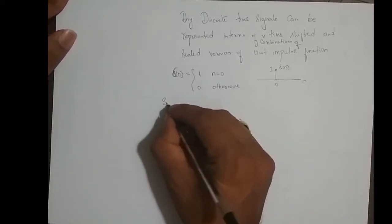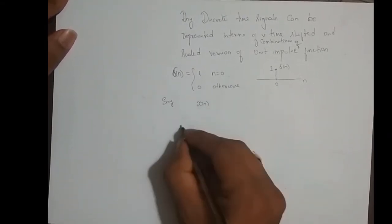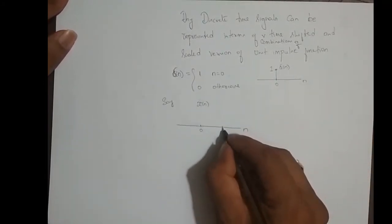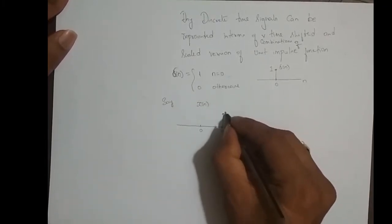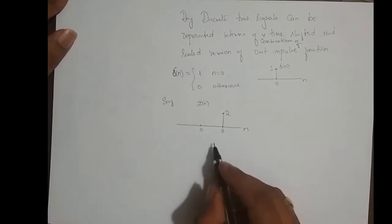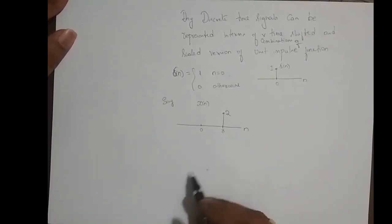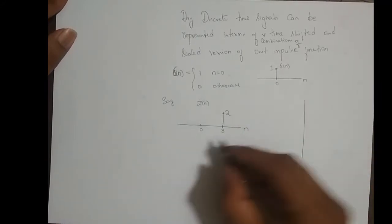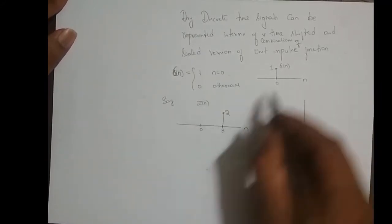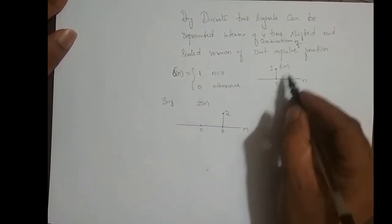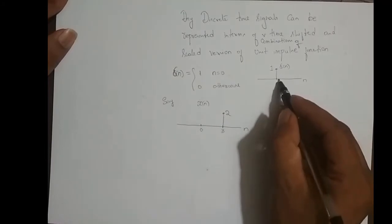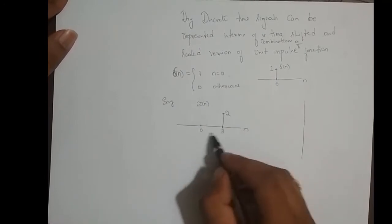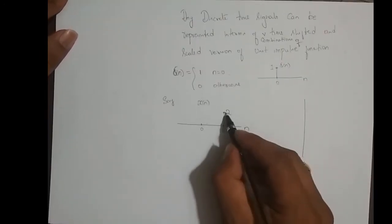Say I need a discrete time signal at n equal to 3, and I want its amplitude to be 2. Now how do we represent this in terms of the unit impulse function? This is nothing but the delta of n signal shifted right 3 times — so this impulse goes to the right side 3 times from 0 — and its amplitude is scaled by 2.